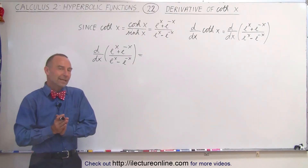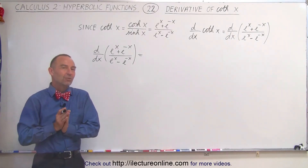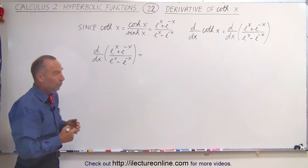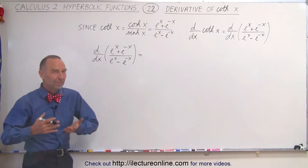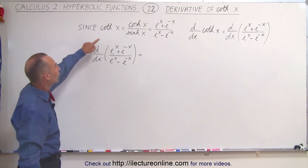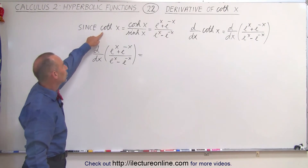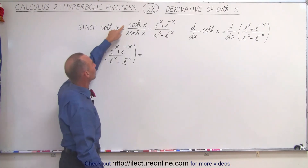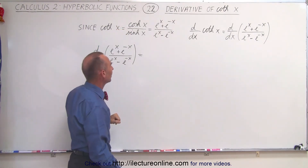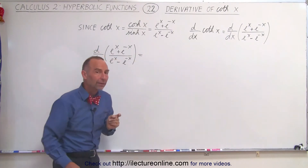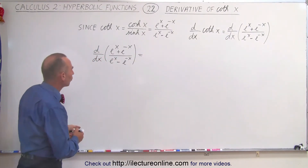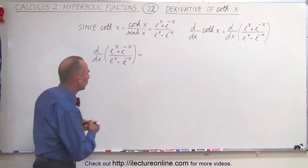Welcome to our lecture online. Now let's take the derivative of the hyperbolic cotangent of x. We're going to use the same technique as we did for the hyperbolic tangent. Notice that the hyperbolic cotangent is equal to the hyperbolic cosine over the hyperbolic sine — it basically just switches everything around. Since it's a quotient, we're going to use the quotient rule.